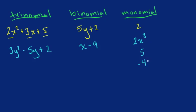Anything that's by itself as one term is a monomial. So remember, trinomial is 3, binomial is 2, and monomial is 1.